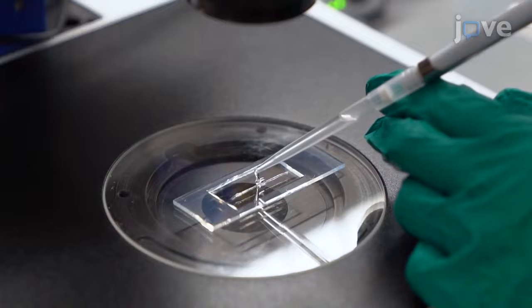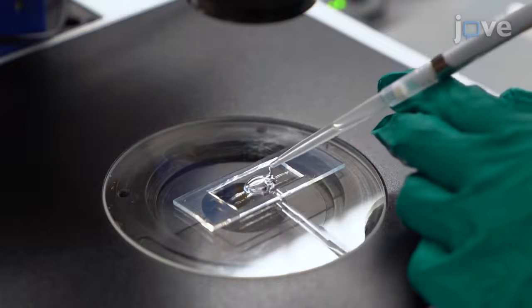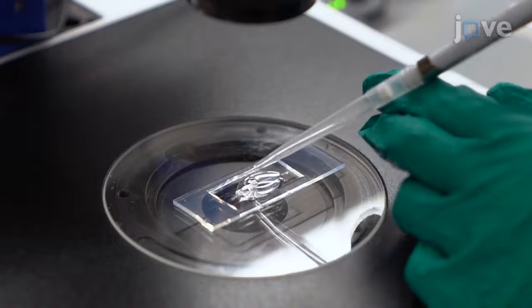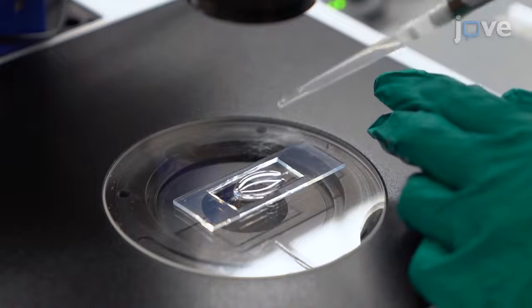If not performing microinjection, fill the silicone spacer halfway to the top with 1:1 halocarbon oil 700 to halocarbon oil 27.